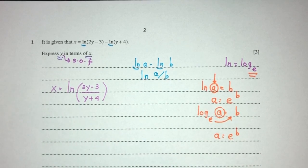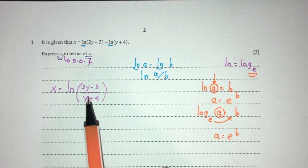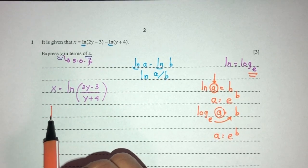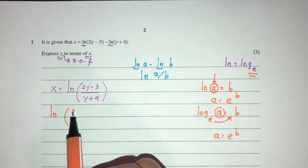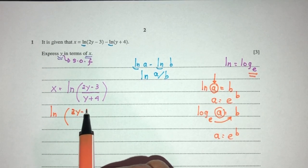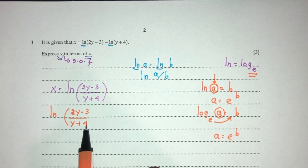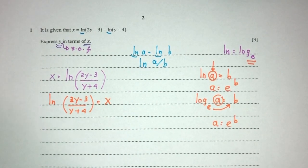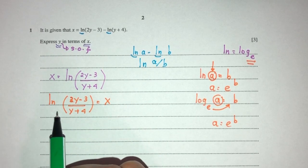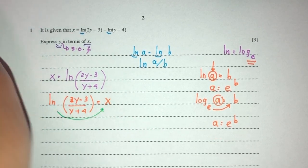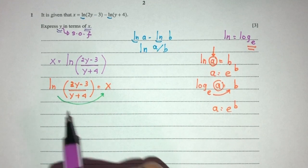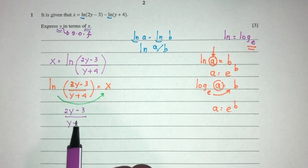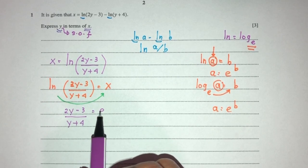Using the same logic to find the value inside: 2y minus 3 over y plus 4 equals e^x. To find the value inside, send the base over — which is exponential — so you have (2y minus 3) over (y plus 4) equal to e^x.